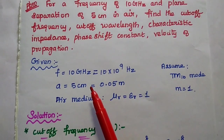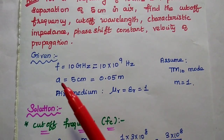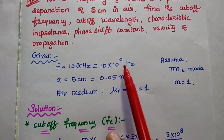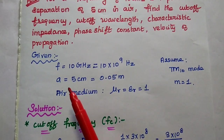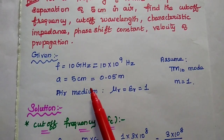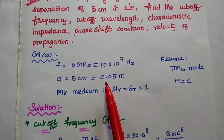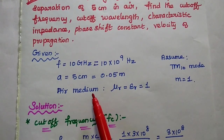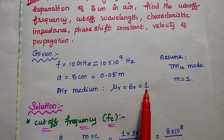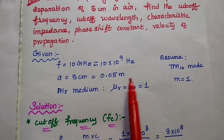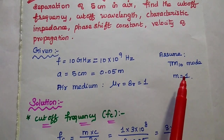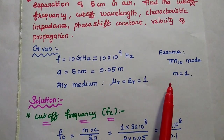In the solution, first we write the given data. The frequency is 10 gigahertz, equal to 10 into 10 to the power 9 hertz. The separation between the planes is 5 centimeter, so a equals 5 centimeter, which can also be written as 0.05 meter. The medium is air, so mu r equals epsilon r equals 1. The mode of wave is not given, so we assume TM 1 0 mode, meaning m equals 1.